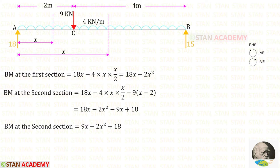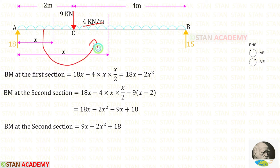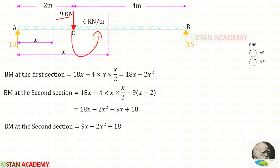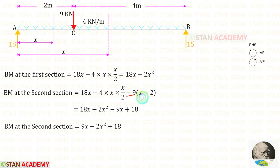Now let us find the bending moment in the second section. Ra is acting clockwise so it is positive; the distance is x, giving 18x. The UDL is acting anti-clockwise so it is negative. The point load of 9 kN is also acting anti-clockwise, so it is negative, and its distance is (x − 2). Multiplying −9 by (x − 2), we get the terms 18x − 9x = positive 9x, so the moment for section 2 is M = 18x − 2x² − 9(x−2).